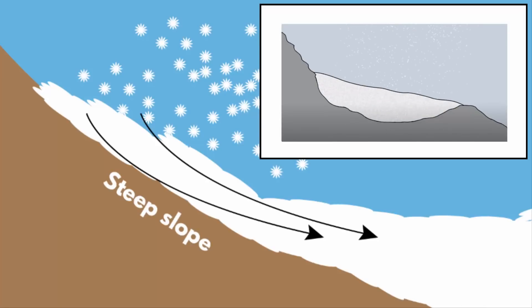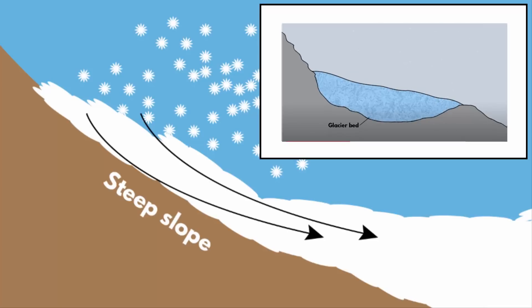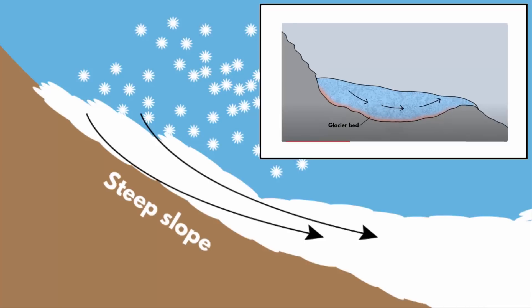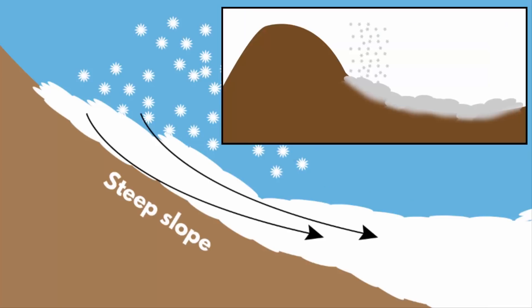If you look at the movement of glaciers, the bottom layer of the glacier — also called the glacier bed — starts to melt. That reduces the friction between the glacier and the bedrock, making the entire glacier slowly move.